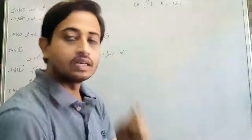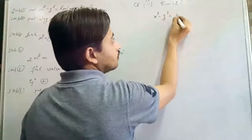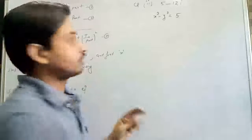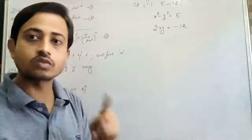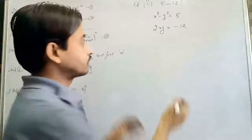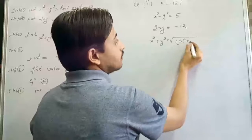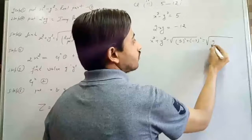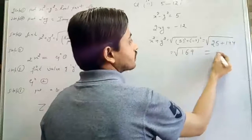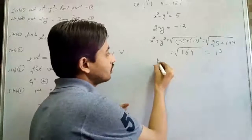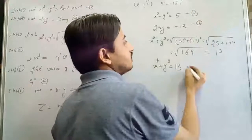First step: X² minus Y² equals the real part, which is 5. Second step: 2XY equals the imaginary part, which is negative 12. Third step: find X² plus Y², which is √(5² + 12²) equals √(25 + 144) equals √169, which is 13. So X² plus Y² equals 13. This is equation 1, equation 2, and equation 3 respectively.